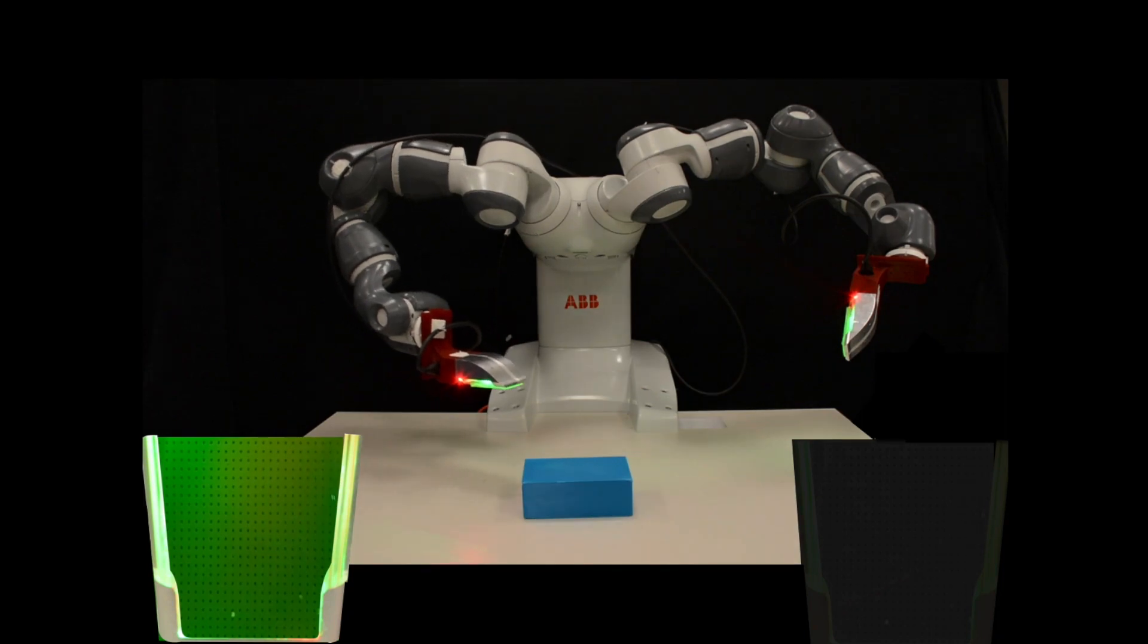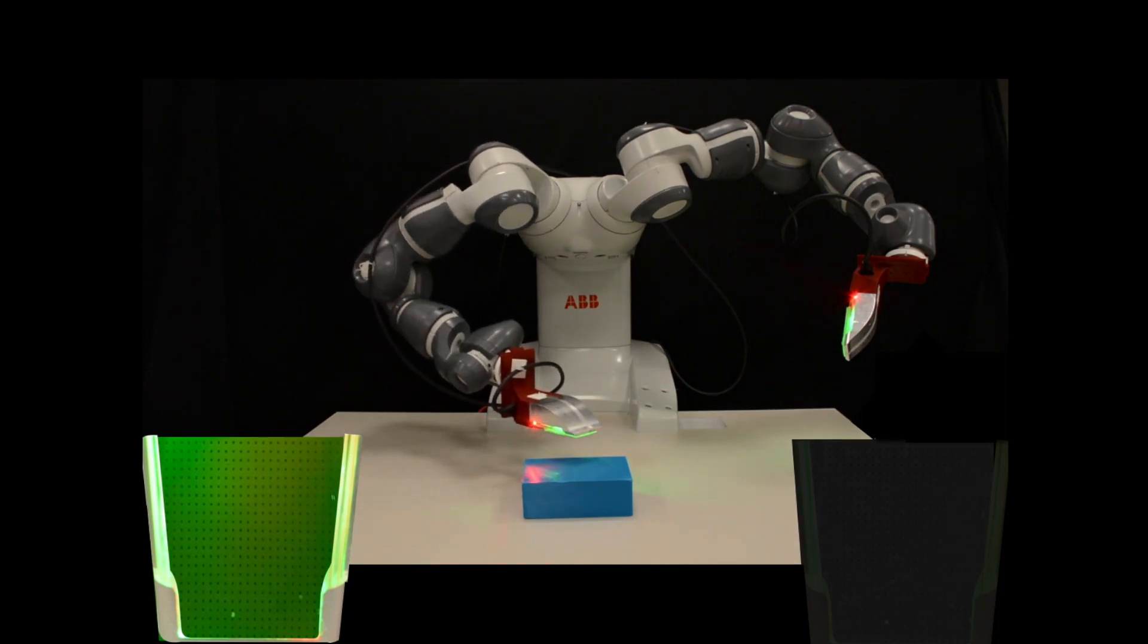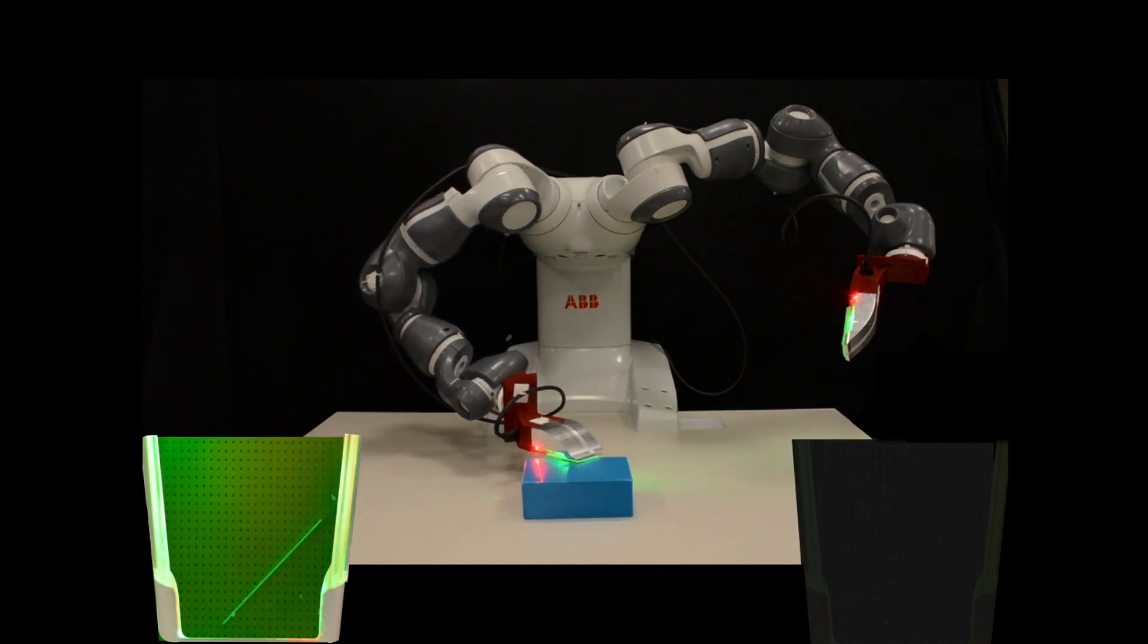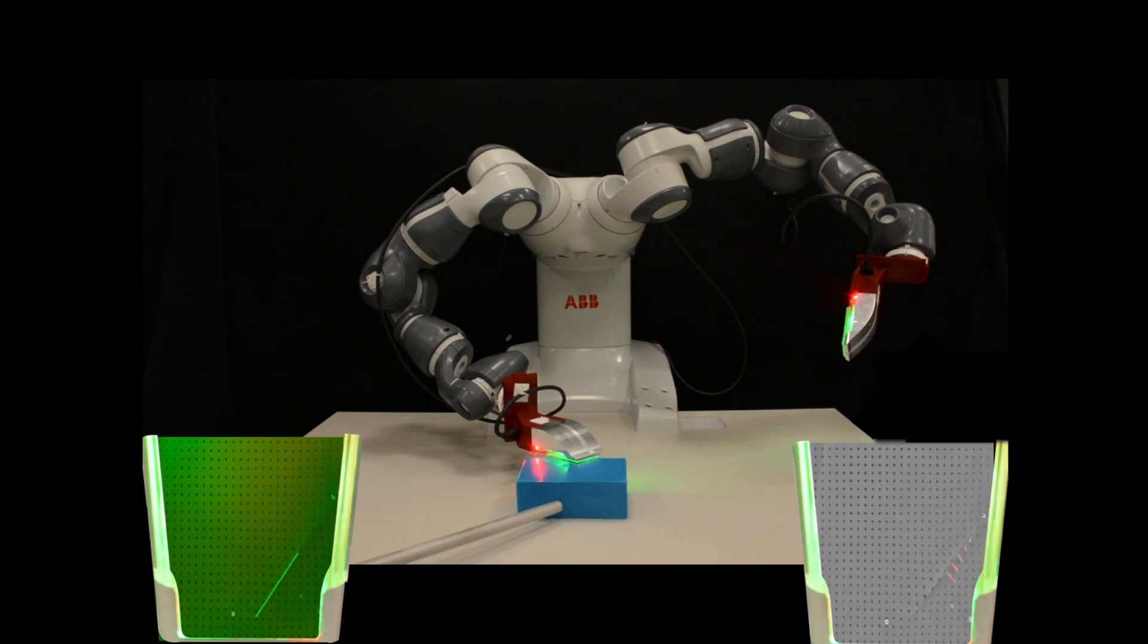The robot targets contacts on geometric features of the object, for example object edges, and tracks their motion in the tactile imprints. In addition, the robot also monitors slip-stick interactions by observing shear forces at contact.